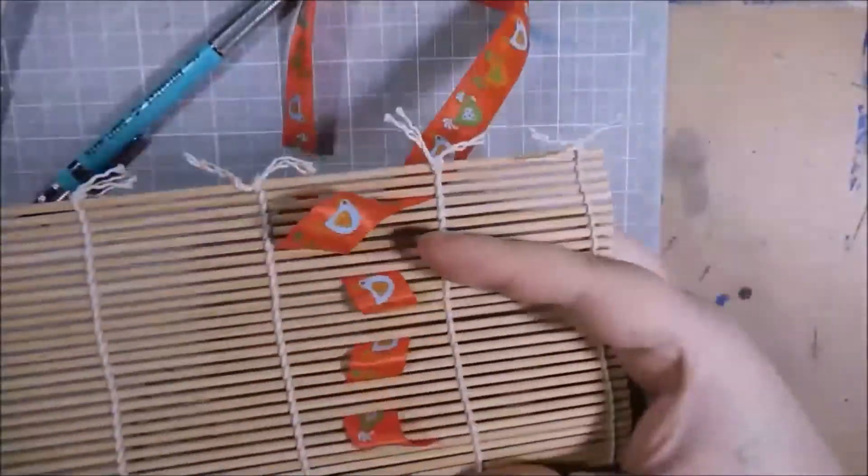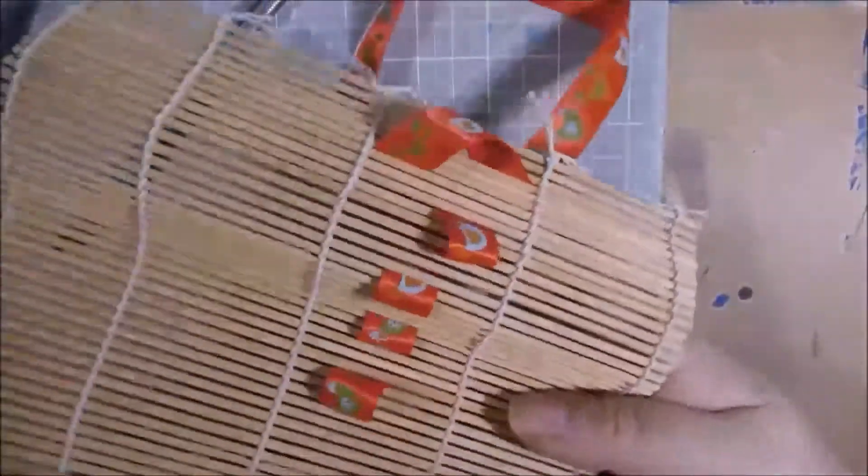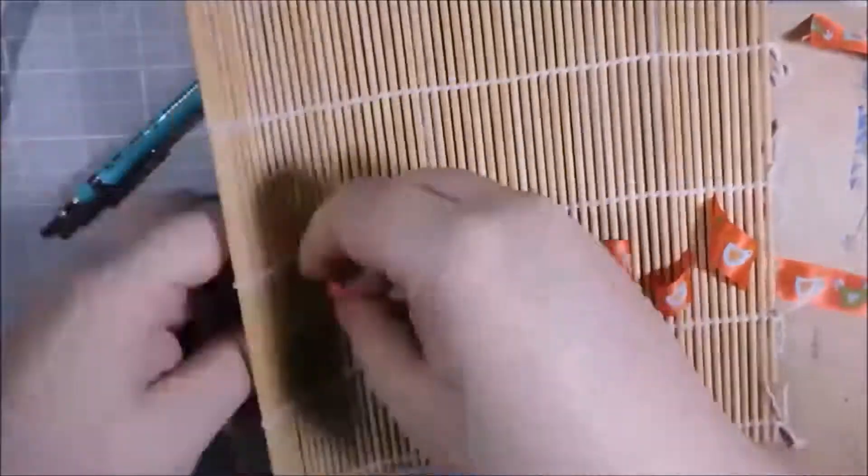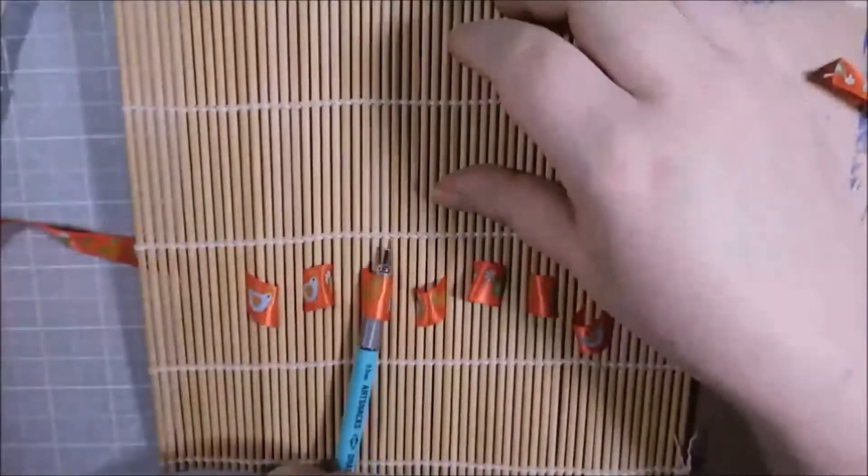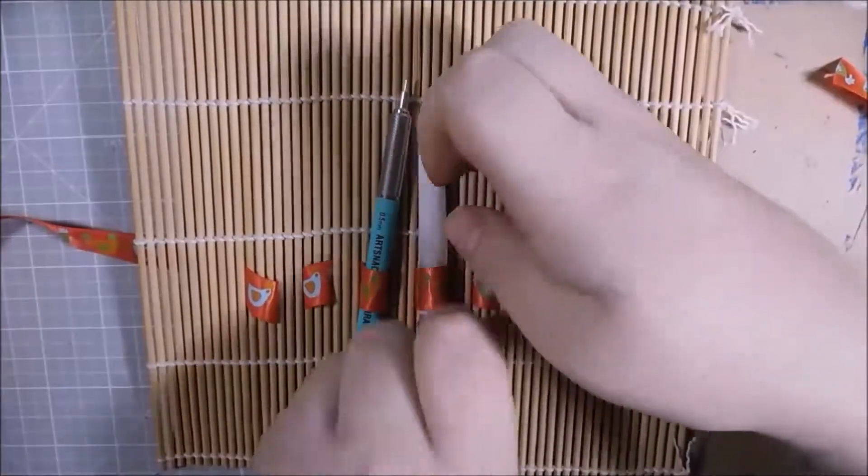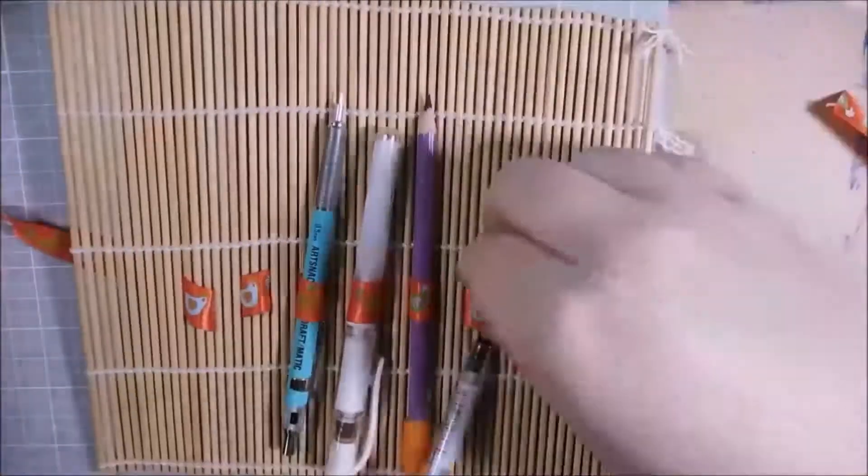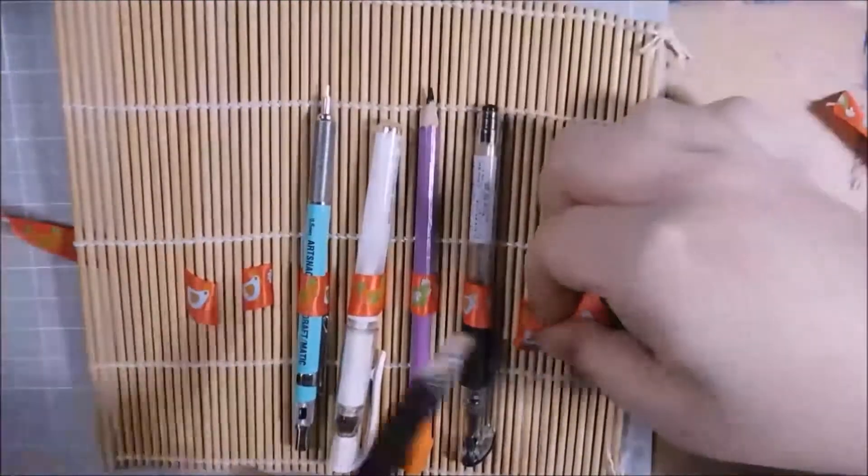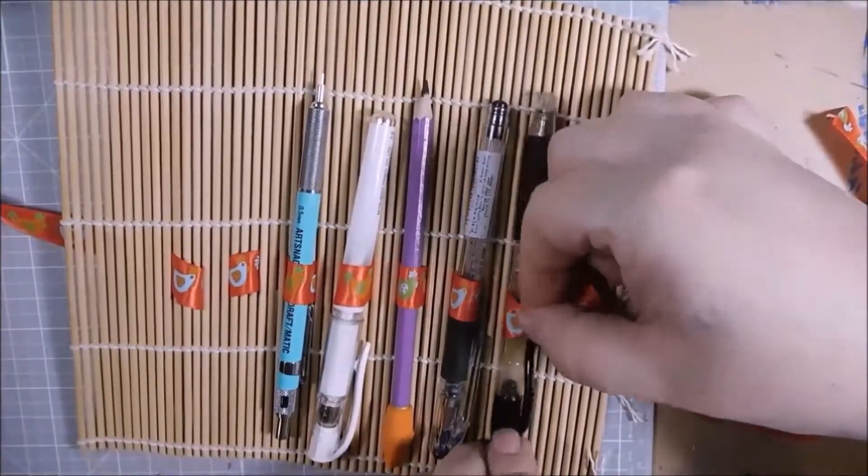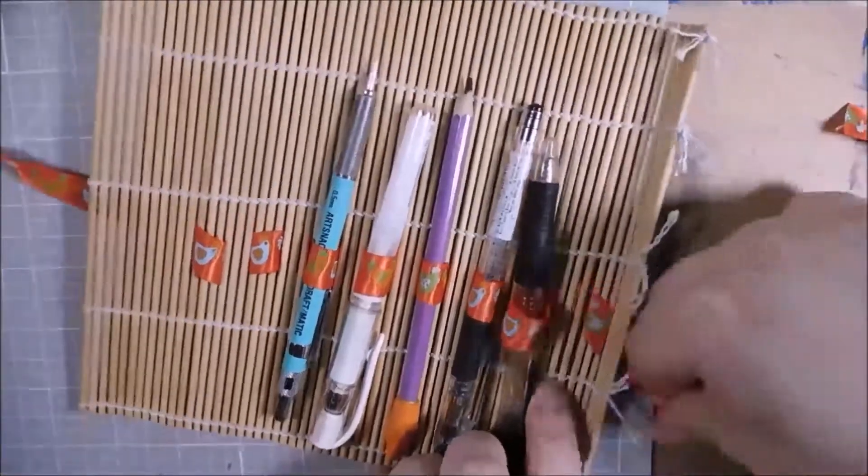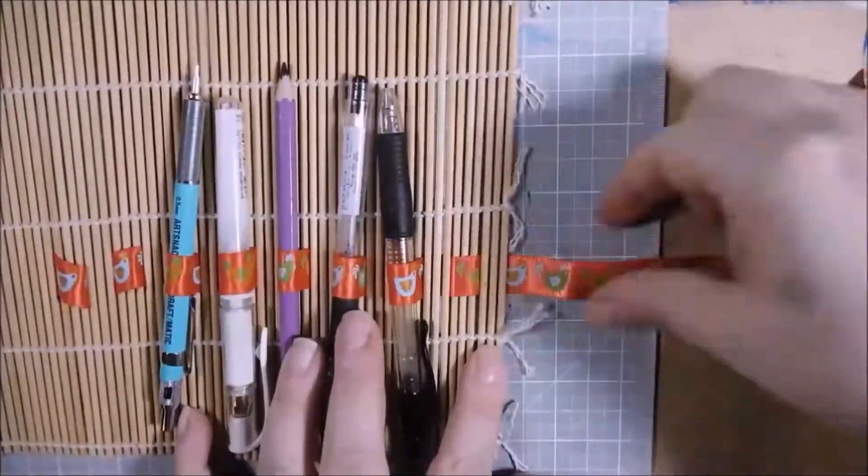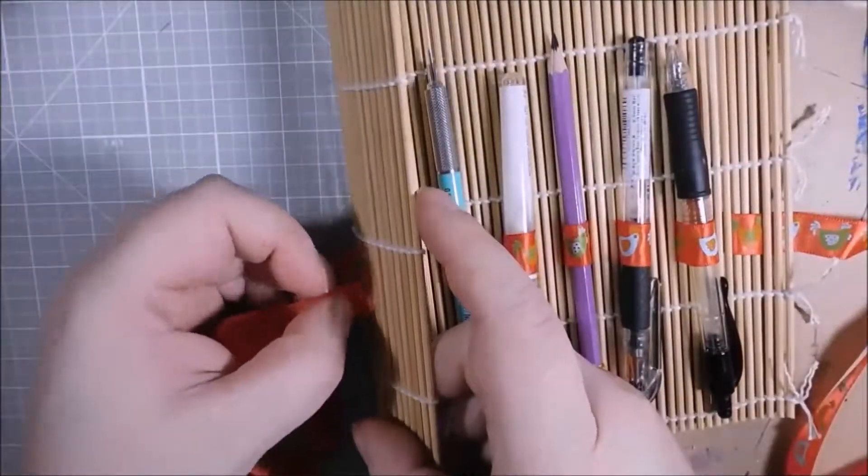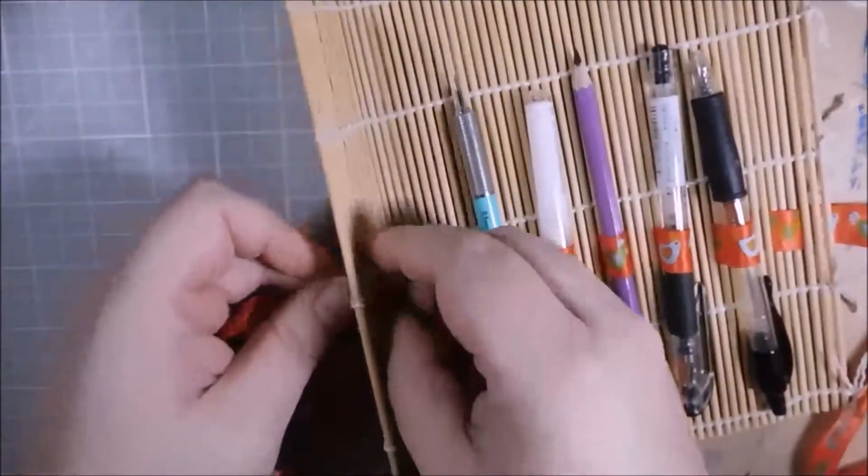Of course, put your items in. Pull the ribbon tight so everything stays in there nice and snug. You can see nothing fell out. I'm going to go ahead and weave the last few sections, and then we're going to roll it up.